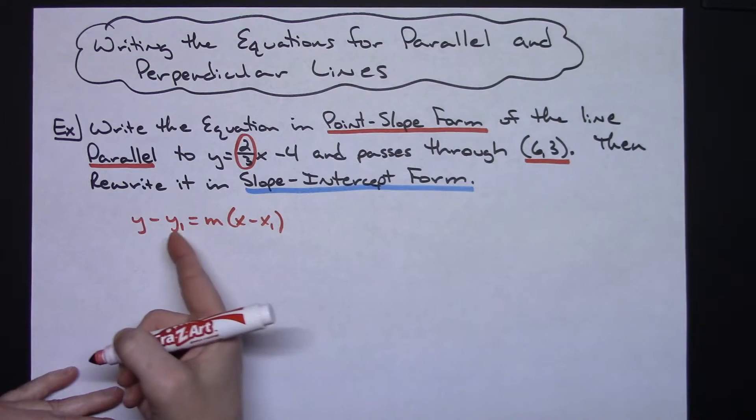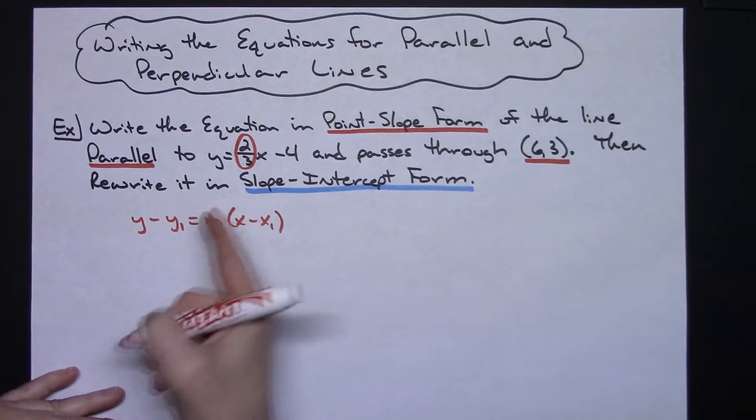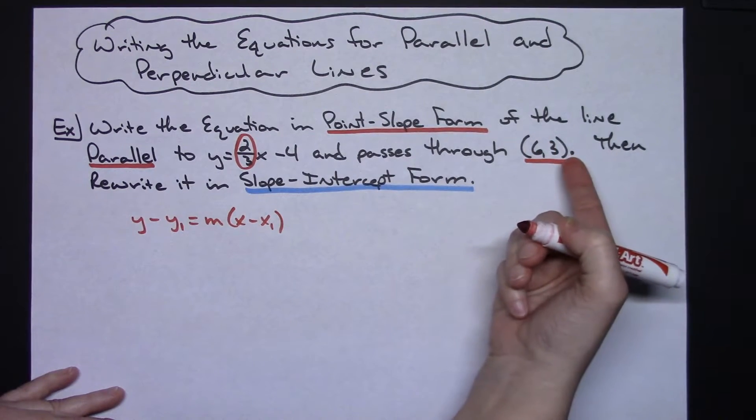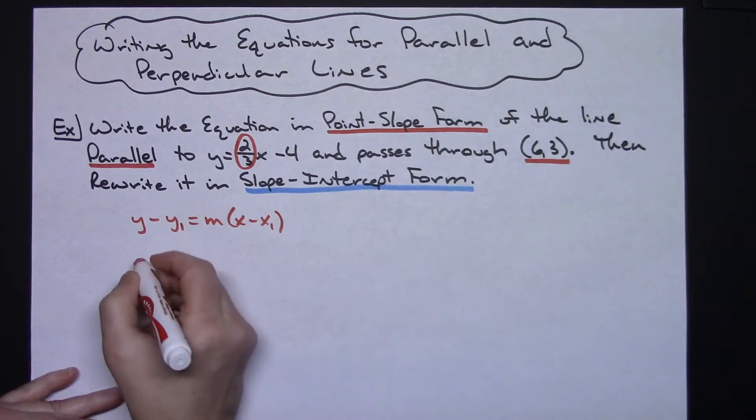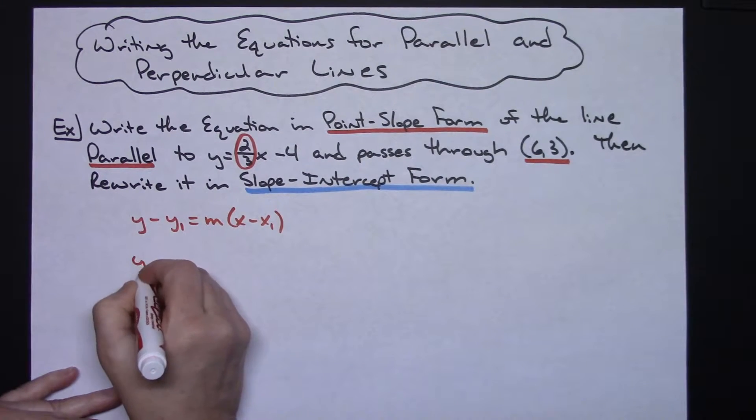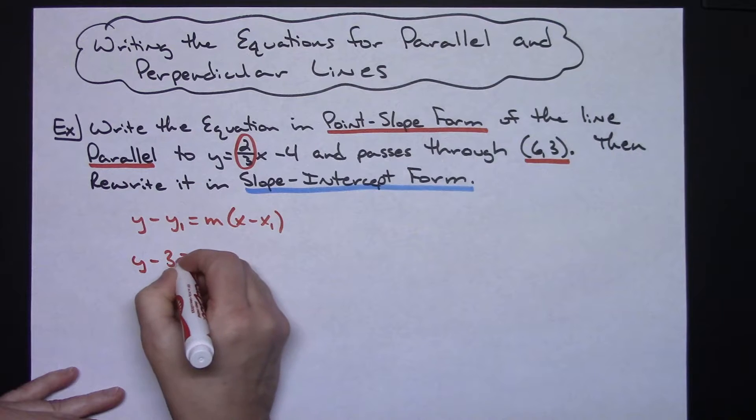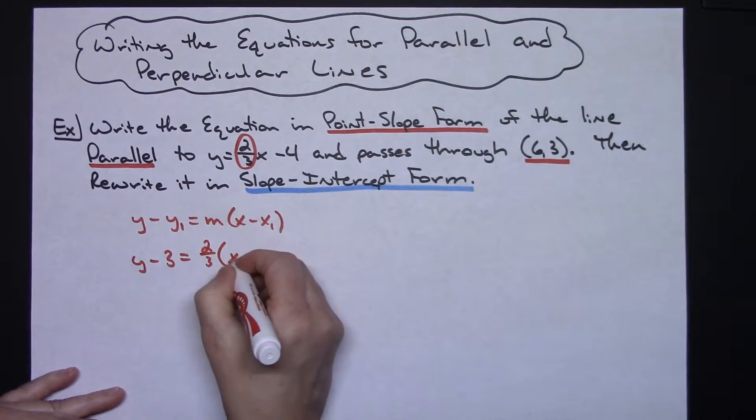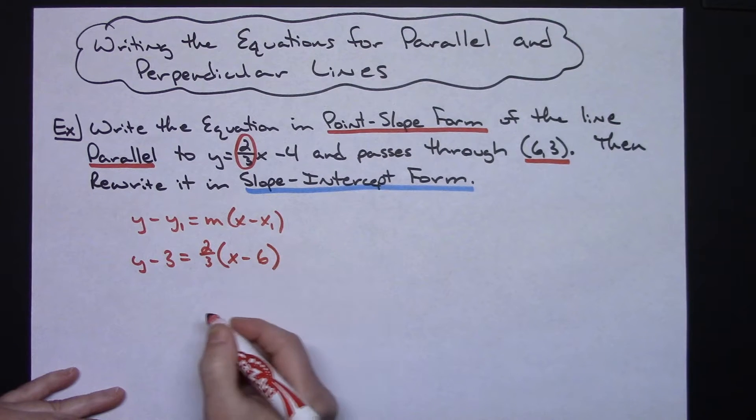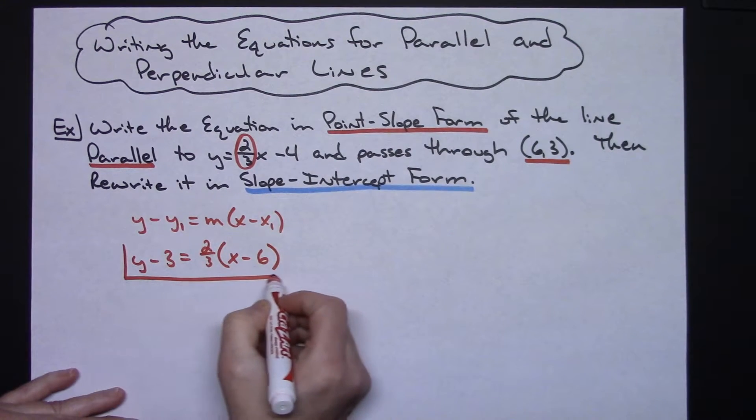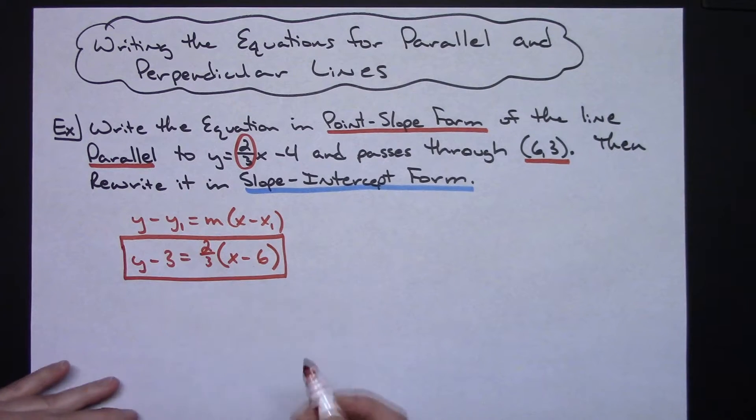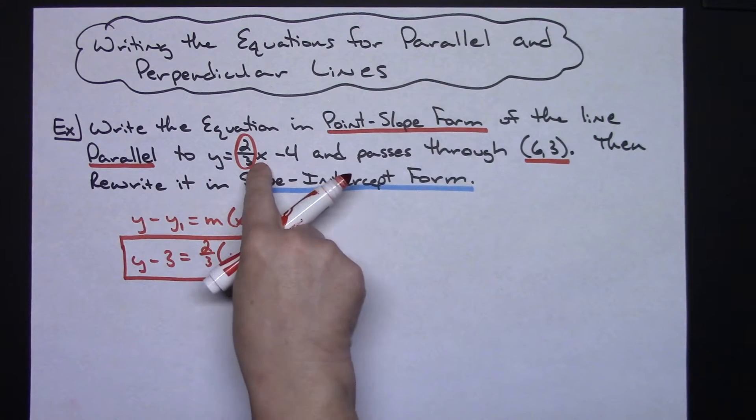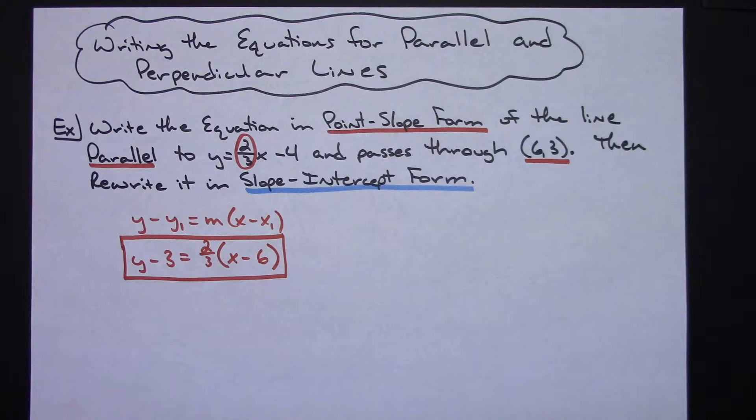So remembering that putting the points in, it's going to be the opposite of what I see over here, so I'll need a negative 3 and a negative 6. So y minus 3 equals same slope, parallel line, two-thirds, times x minus 6. So there is my point-slope form of the line that is parallel to this line and goes through that point.